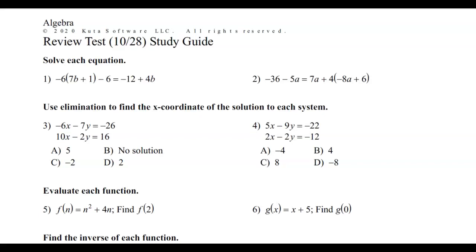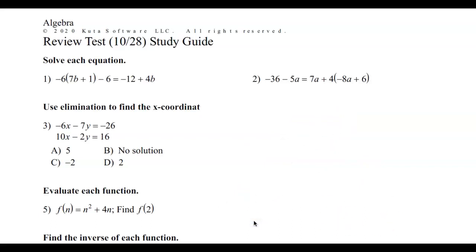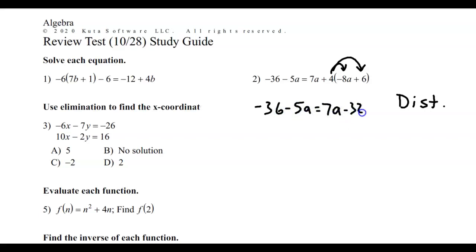So this is solving a basic linear equation. You just need to remember the steps. The first step is going to be, if possible, distribute. As you can see, I do have some distribution I can do here. So if we distribute, we end up with negative 32a plus 24 on the right side there. The next thing is to combine like terms on the left and on the right side. As I look on the left side of the equal sign, there are no like terms to combine.